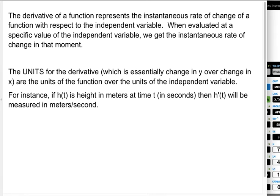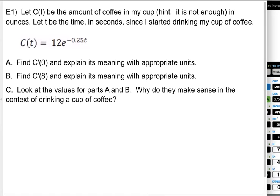So we're going to walk through a bunch of examples just sort of giving context to how you use the derivative in a word problem, because that's sort of the whole thing we do in this class. Alright, so example one, let C(t) be the amount of coffee in my cup (hint: it is not enough) in ounces. Let t be time in seconds since I started drinking said cup of coffee. So C(t) is 12e^(-0.25t).